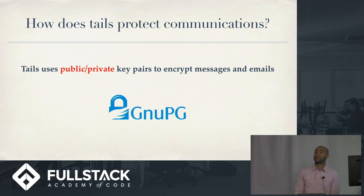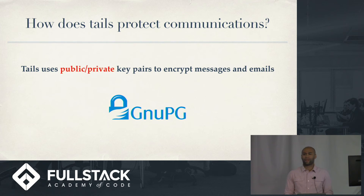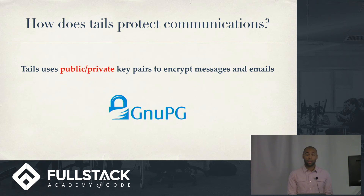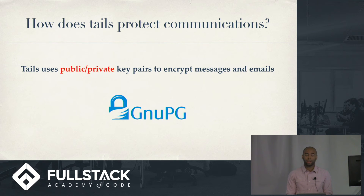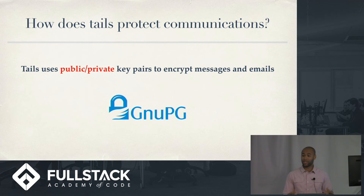Let's assume all of that somehow breaks down and someone has control over the entire Tor network. You're going to want to encrypt your communications in the event that everything breaks down. So how does TAILS do that? It uses GNU PGP — a public and private key pair. You send out your public key, and anyone who wants to send you a message can encrypt it with that public key. The only one who can decrypt that message is yourself with the private key. I'll show you how it works using a hypothetical scenario.